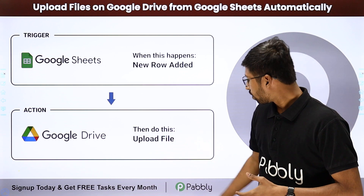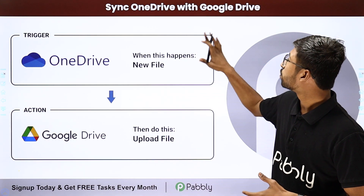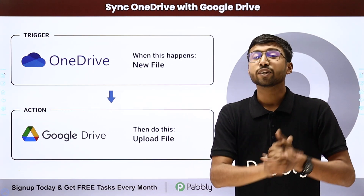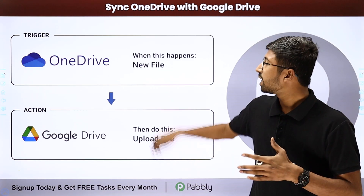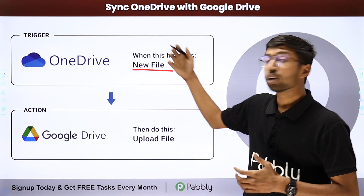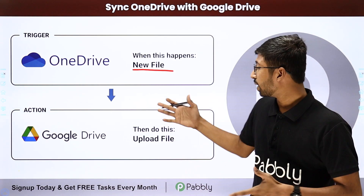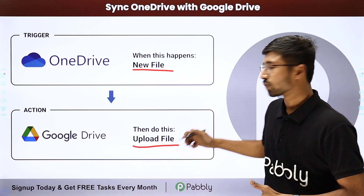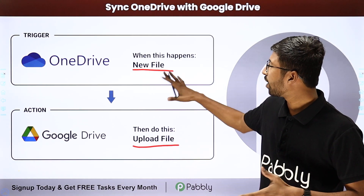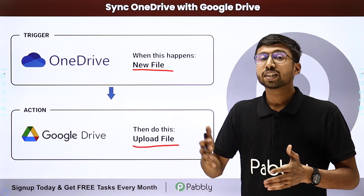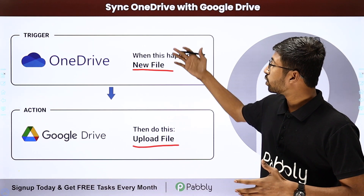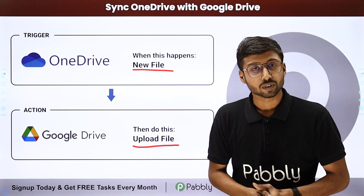The last and final automation idea is how to sync OneDrive with Google Drive. OneDrive is another popular cloud storage platform. Using this automation, whenever a new file is uploaded to your OneDrive account, the same file will automatically be uploaded to your Google Drive as well. You don't have to manually back up files across two platforms. You can also reciprocate this process — whenever a new file is uploaded on Google Drive, it can be synced to OneDrive automatically.